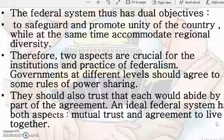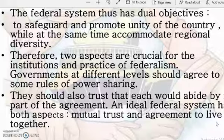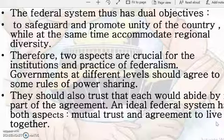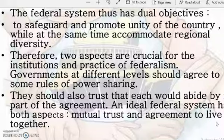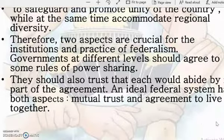We cannot make laws where the central government compulsorily dictates to every state government, because state governments know their people better. The central government should also look at problematic areas where a state government finds it difficult to handle. There should always be trust between the state and the central government, and they should promote each other's growth — this is one of the main objectives of the federal system.